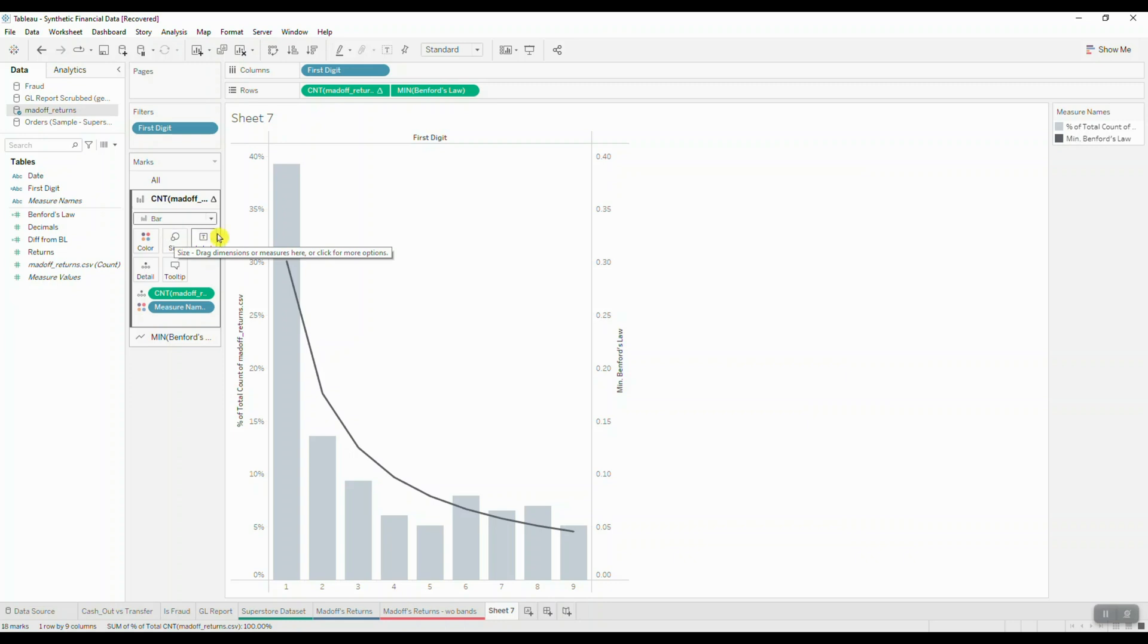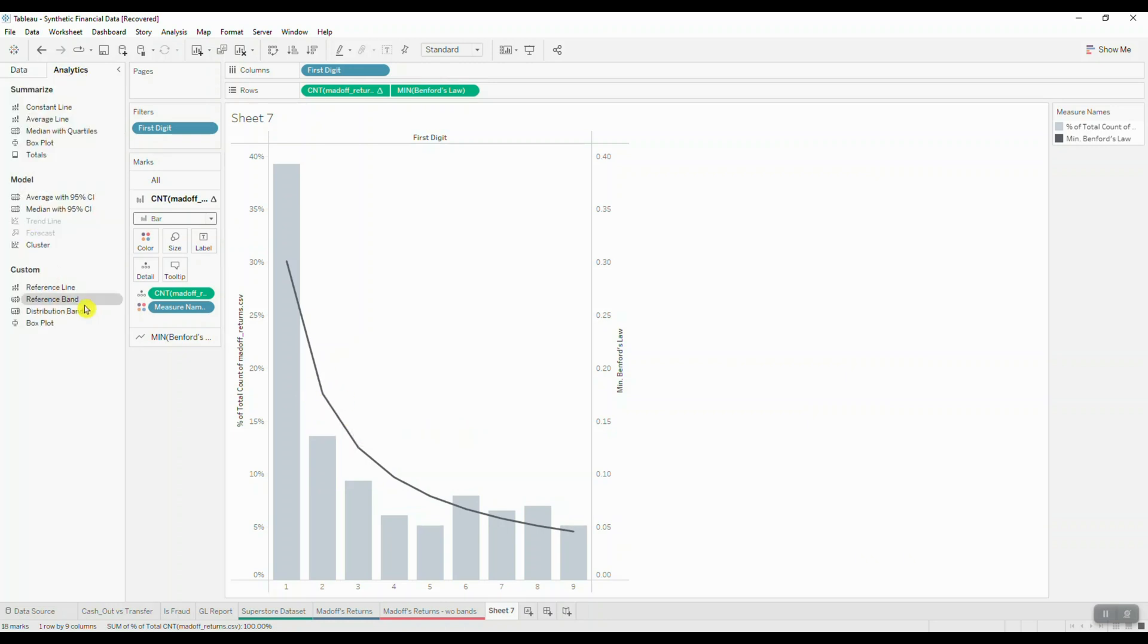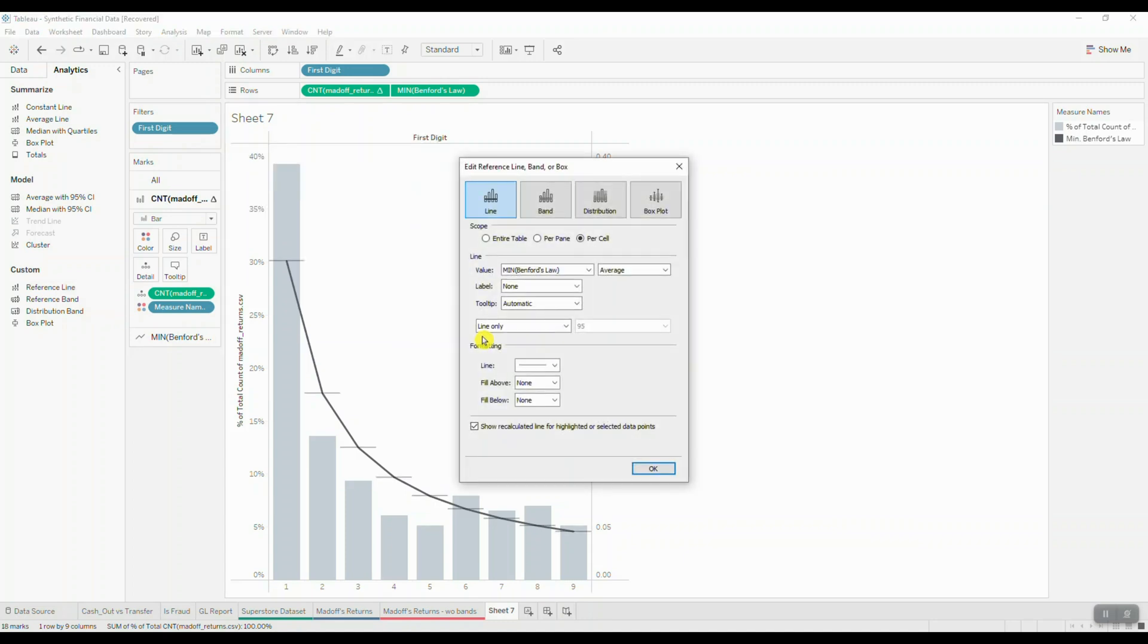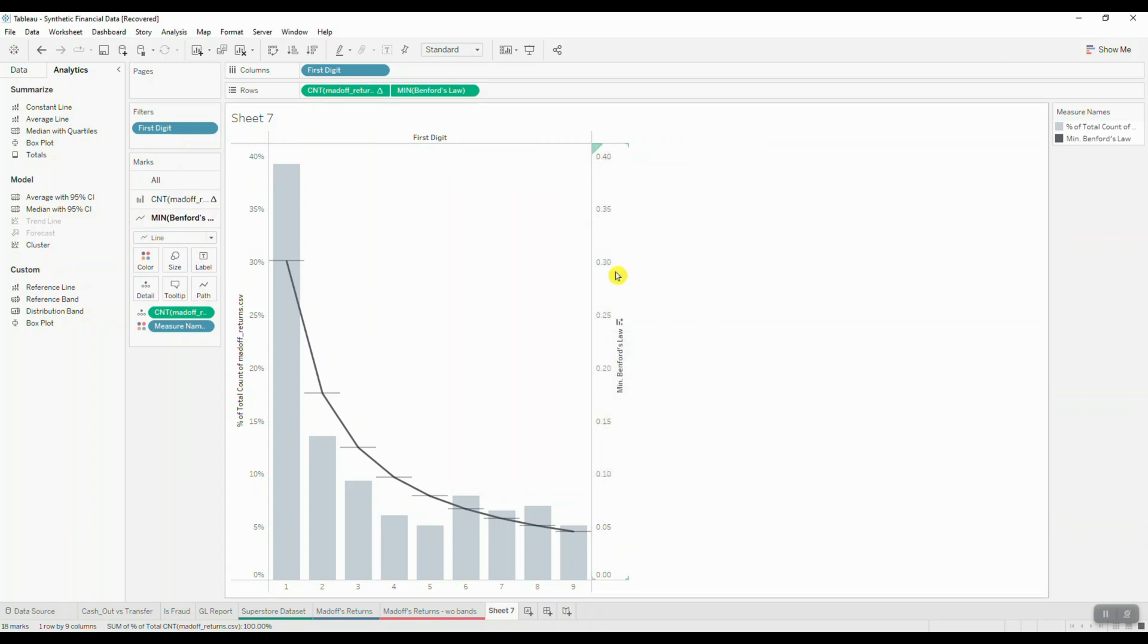Let's add a reference line to each bar in order to easily compare our actual values to our expected frequencies as depicted by Benford's law. We're going to click on analytics, add a reference line, and we want our reference line to be over top of each bar and represent the cutoff value for Benford's law. Let's hide this axis on the right hand side.